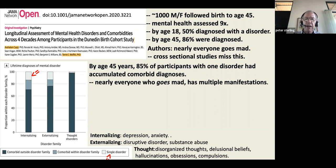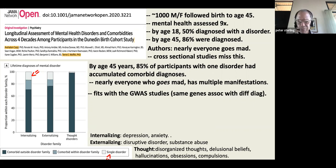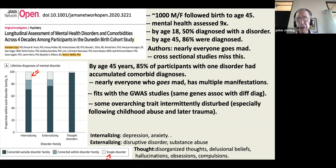The conclusion: nearly everybody goes mad, and of those who do, nearly all have multiple manifestations. This fits with the genome-wide association studies — the same genes are associated with all these different diagnoses. It looks like there's some overarching trait or traits that become intermittently disturbed, especially following childhood abuse and later trauma.